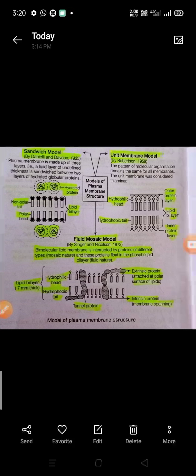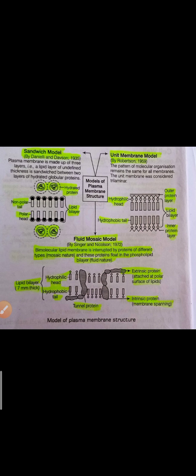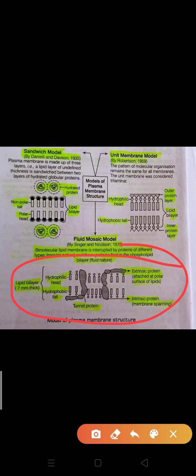This is the most acceptable model. The lipid layer has a hydrophilic head and hydrophobic tail. The outer protein is known as the extrinsic protein, and the inner one is the intrinsic protein. On screen you can also see a structural diagram to understand how the model is represented — this is the fluid mosaic model, this is the unit membrane model, and this is the sandwich model.